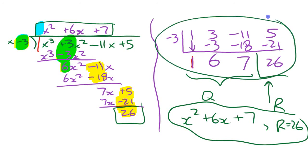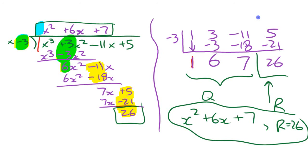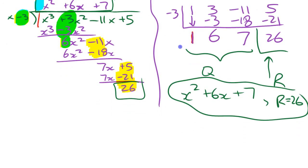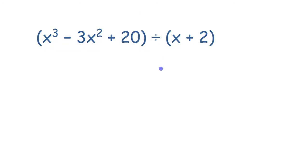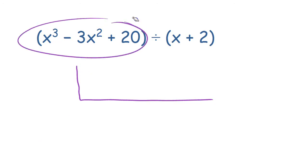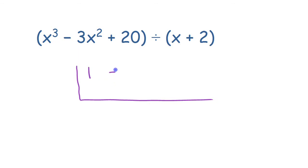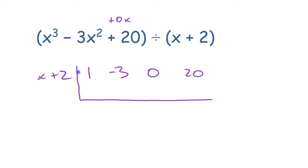Let's do one more quick example using synthetic division directly: x cubed minus 3x squared plus 20, divided by x plus 2. You write the coefficients of the polynomial. There's no x term, but you still need to represent it — so you put a zero, because it's like plus zero x. Your four coefficients are 1, negative 3, 0, and 20. Then put 2 from the divisor, since that's all that matters.